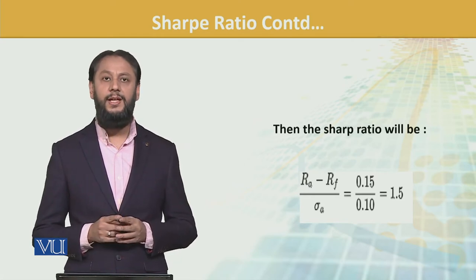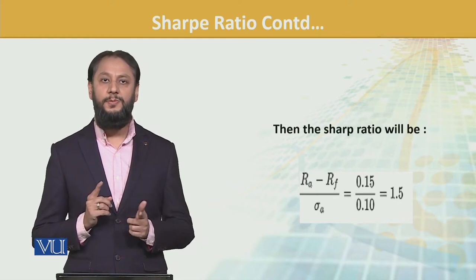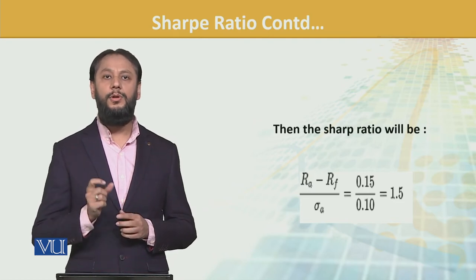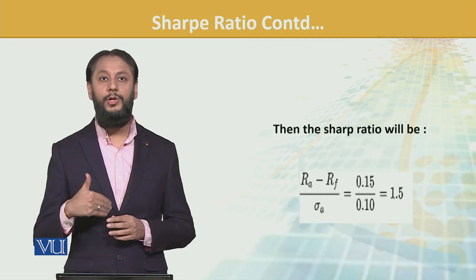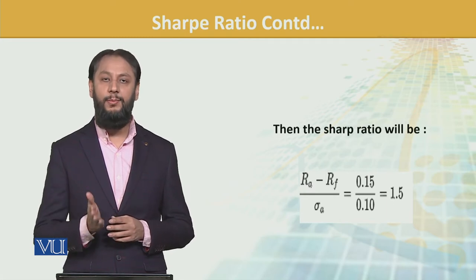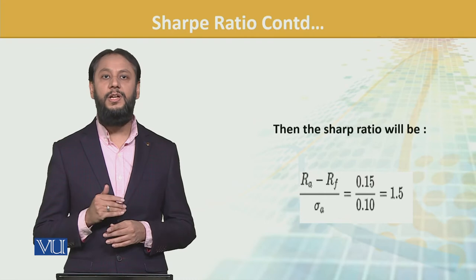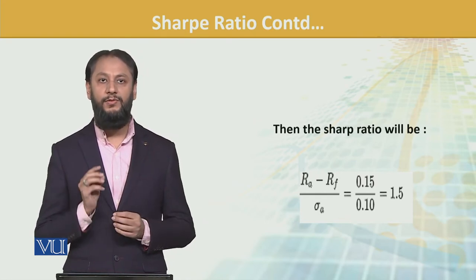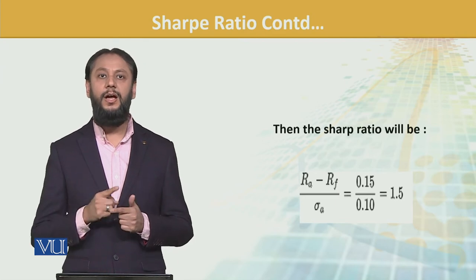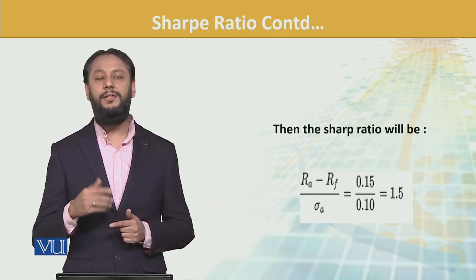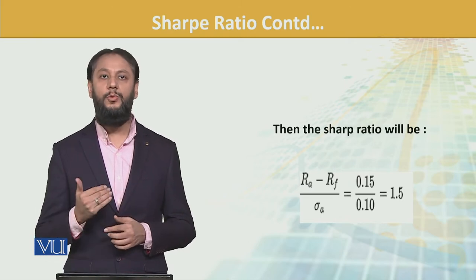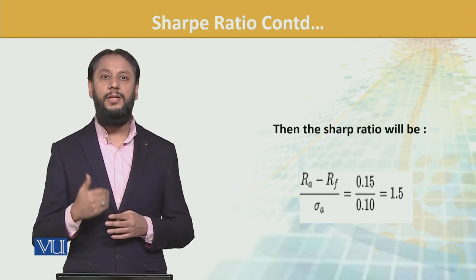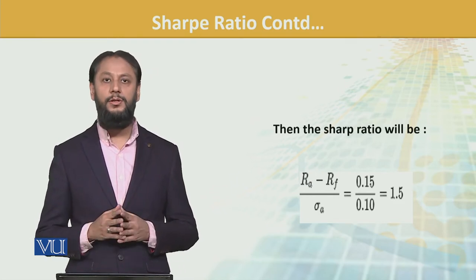0.15 कैसे आ रहा है — जो हमने formula पढ़ावा है, कि it is expected return minus RF. हमें उसने data में already risk premium दे दिया था कि RF से ऊपर. कई दफ़ा आपको data में दोनों चीज़ें भी दे सकता है — 15% भी दे दे, साथ risk-free rate 5% भी दे दे. तो अगर आप वो 5% minus कर लेते तो आपका answer गलत हो जाता. इस situation में उसने खुद ही हमें calculate करके बता दिया था कि risk-free से over and above हमने इतना कमाया है. So this Sharpe ratio is 1.5.